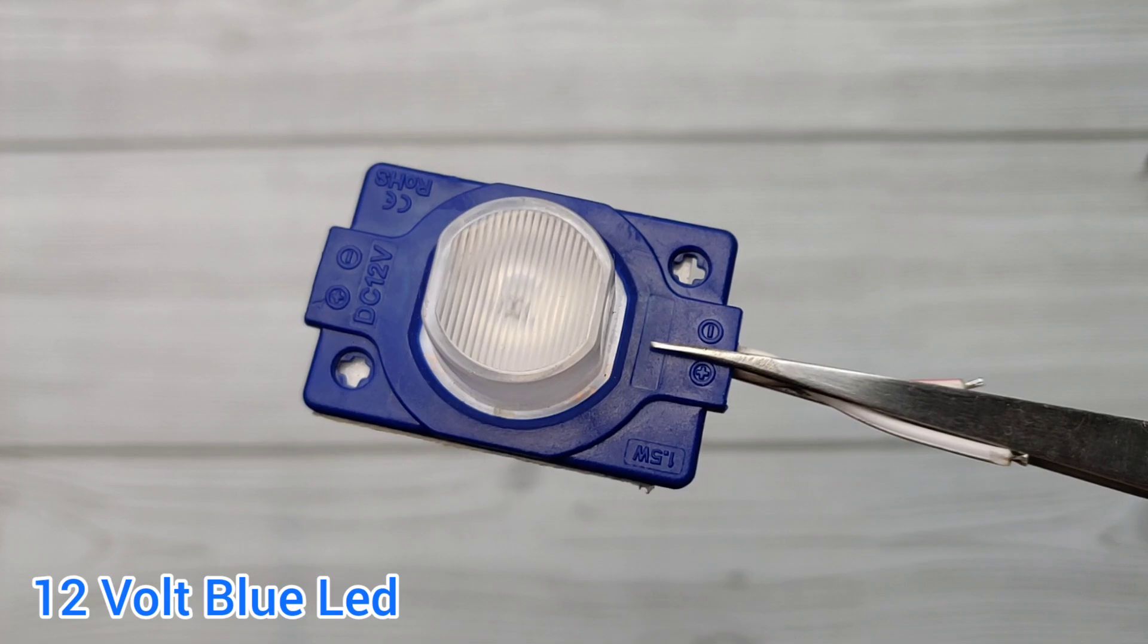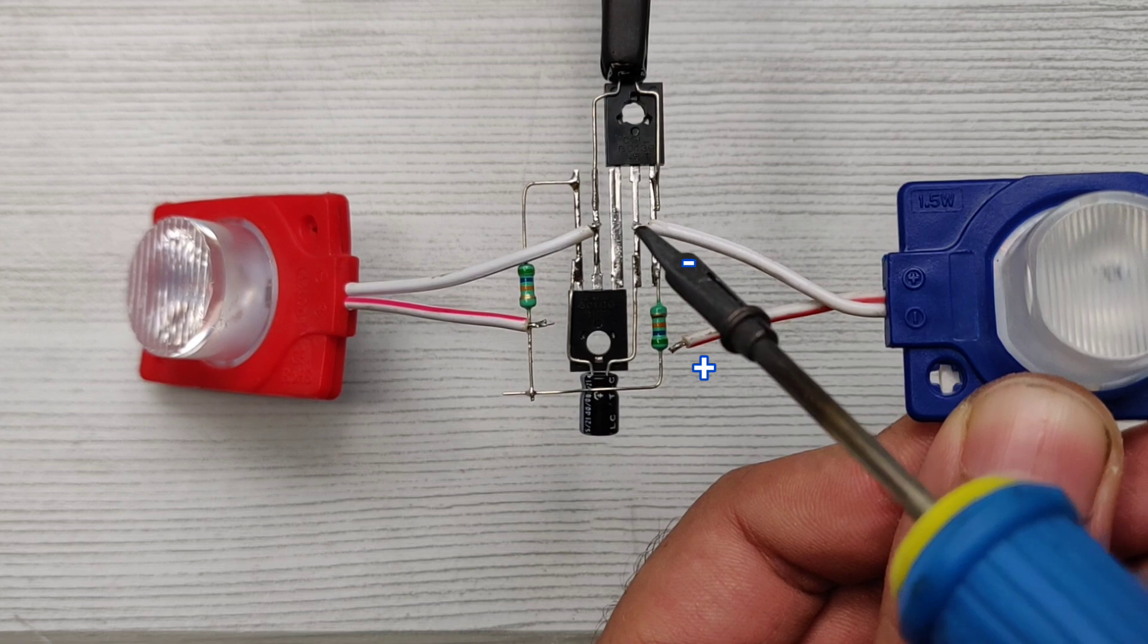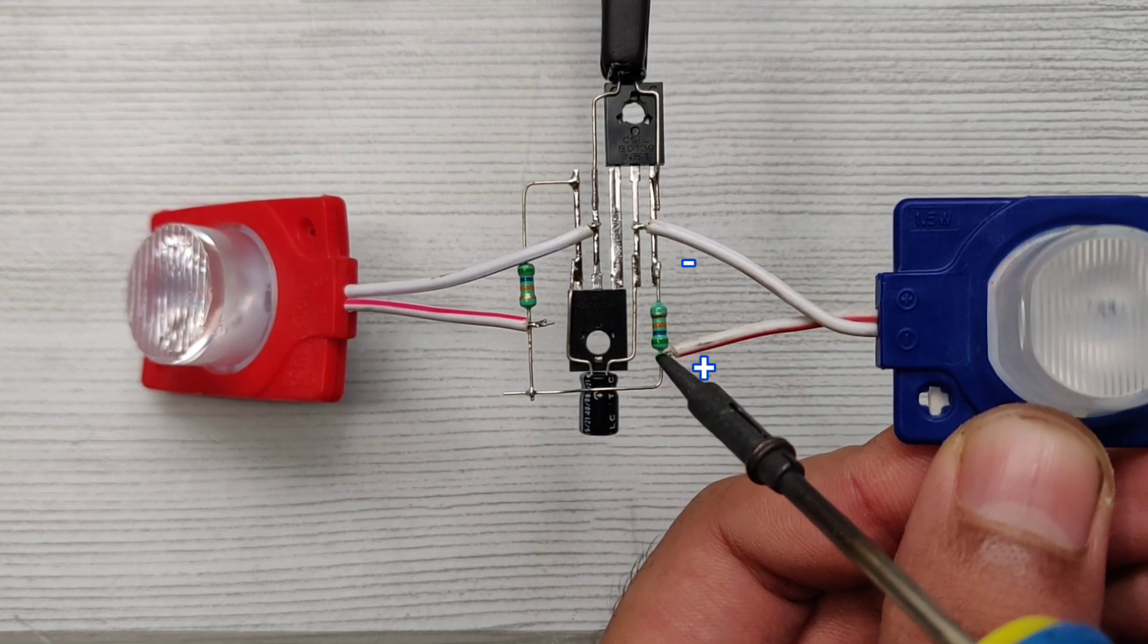Also I used a 12 volt blue LED. Solder LED negative on collector of another transistor and positive on resistor joint.